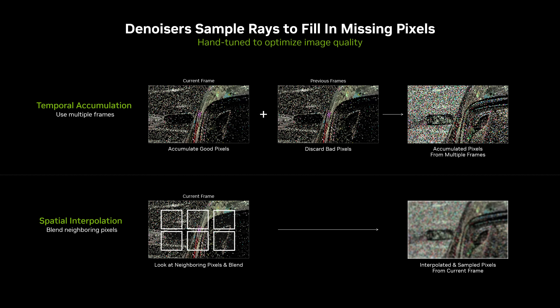Denoisers have a few common challenges. Denoisers accumulate pixels from prior frames, in effect stealing rays from the past in order to increase detail, but they do so at the risk of introducing ghosting and removing dynamic lighting effects.